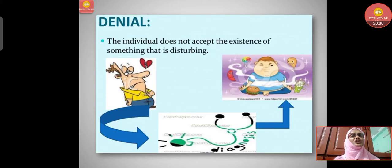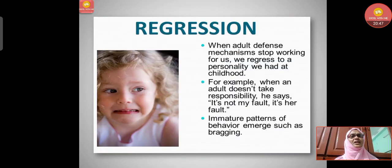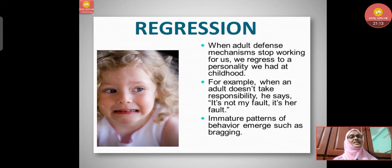Denial is when the individual does not accept the existence of something that is disturbing — they run away from disturbing things rather than confronting them. Regression is when adult defense mechanisms stop working and we revert to a personality we had in childhood. For example, when an adult does not take responsibility and says 'it's not my fault, it's her fault' — that is regression.